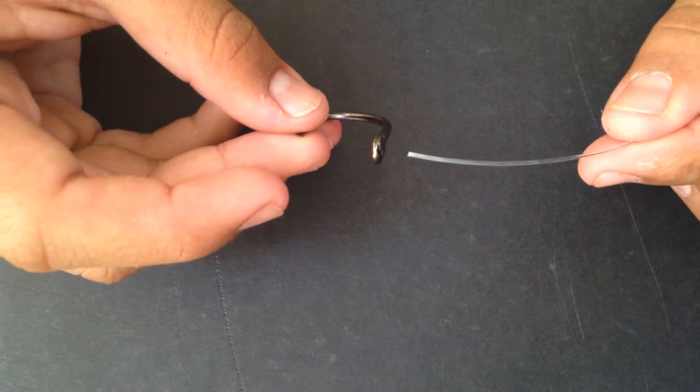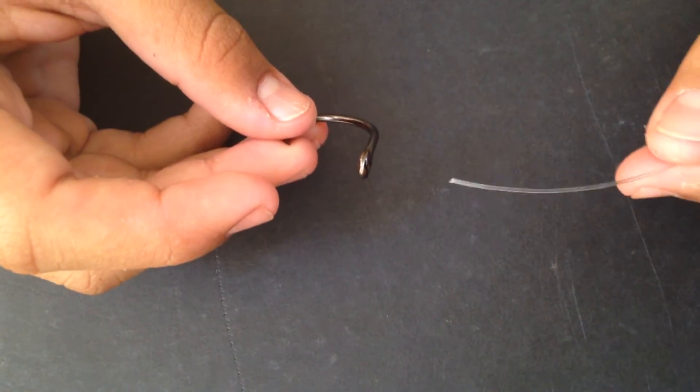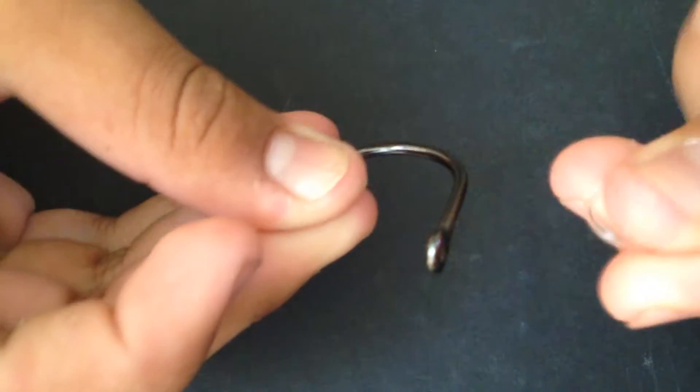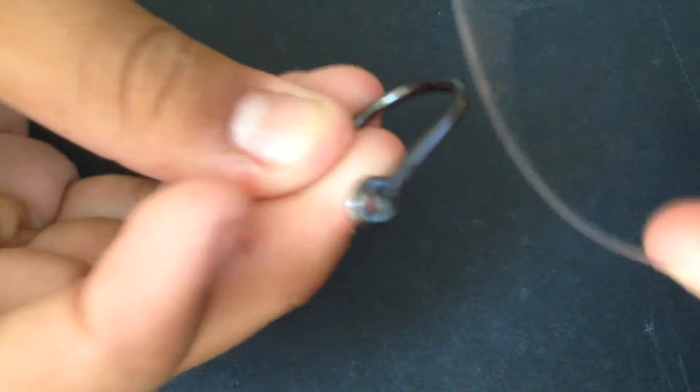So this is my version of tying it. In the end it's the same, but it's just got an extra step. Most people like to just make a loop through here and string it through. But that's difficult. I mean, what if you have big line and a small eyelet?